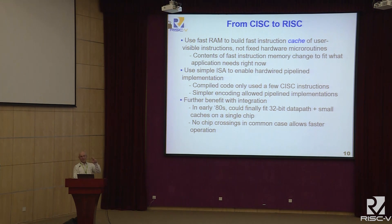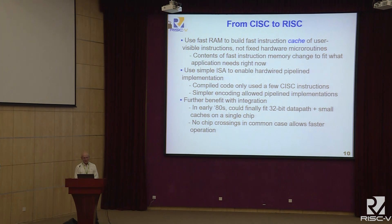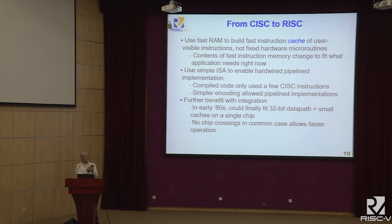The basic RISC idea: the high-speed ROM memory that used to hold microcode would instead become an instruction cache, filled with simple instructions. The instructions would be simple and easy to pipeline, giving a better clock rate. With Moore's Law, if you kept instructions simple, you could fit a 32-bit microprocessor on one chip. The Portland group's complicated design needed three chips; a RISC processor fit in one — much more economical.